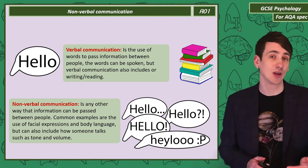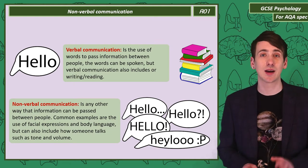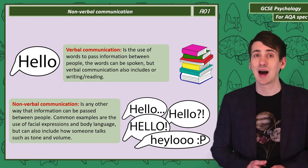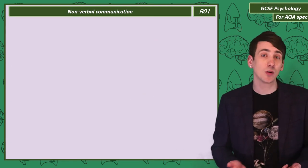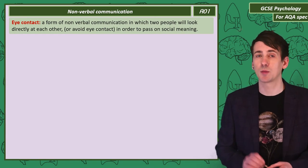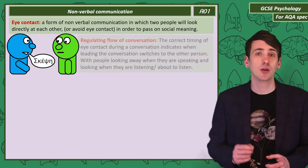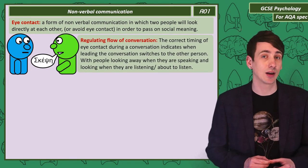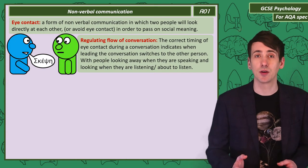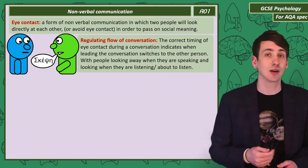Just think of all the different ways you can say sorry, especially when you didn't mean it. Eye contact is when two people look directly at each other or avoid looking at each other to pass on social meaning. In a meaningful conversation, eye contact is used to regulate the flow — the speaker will look away while the listener will be looking.